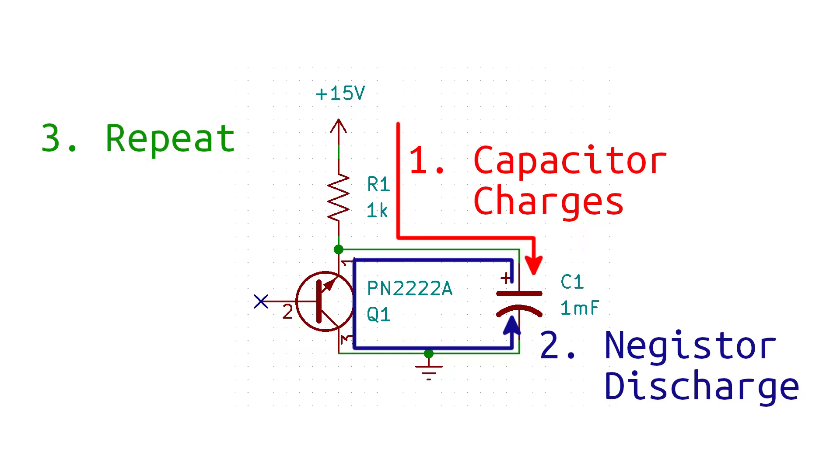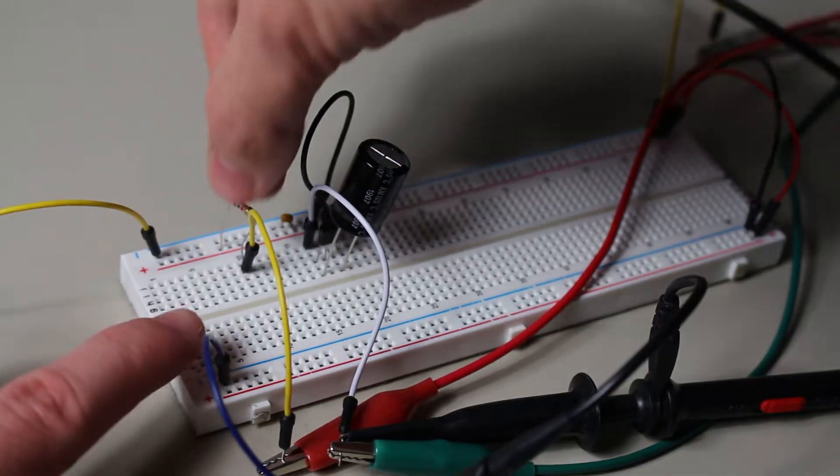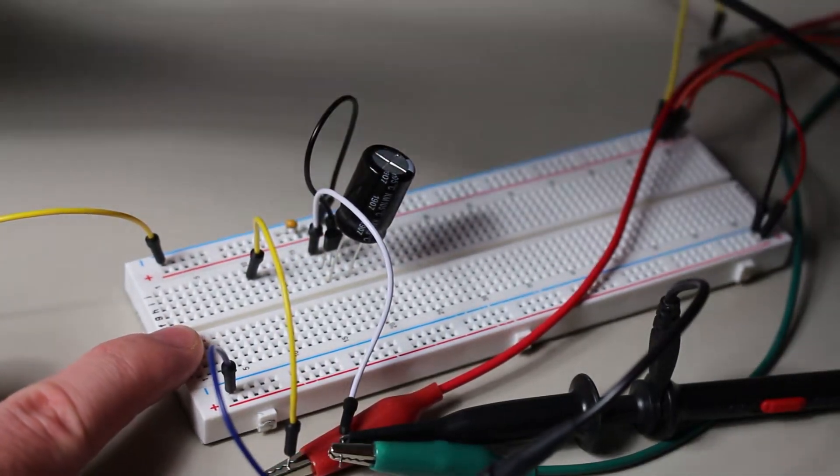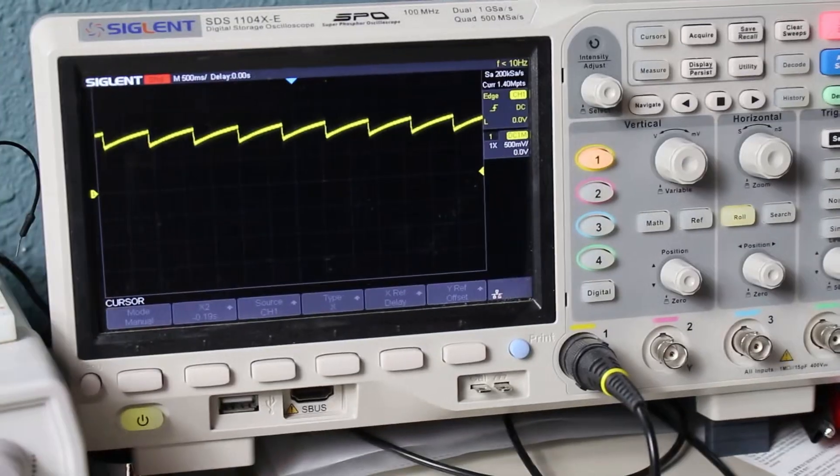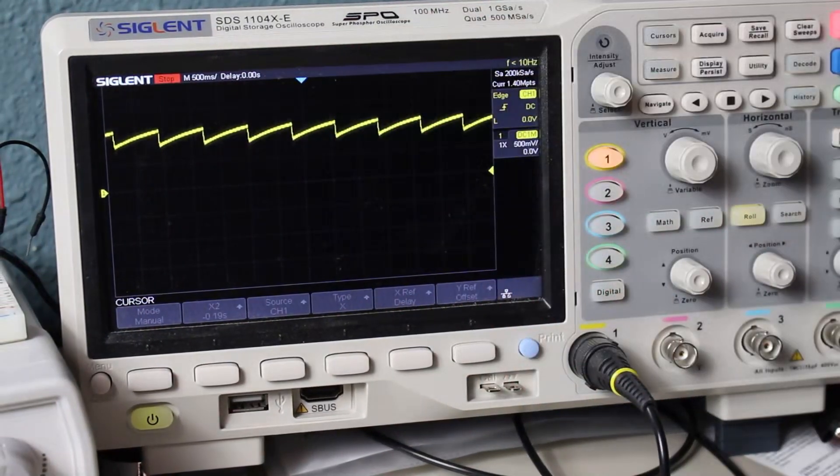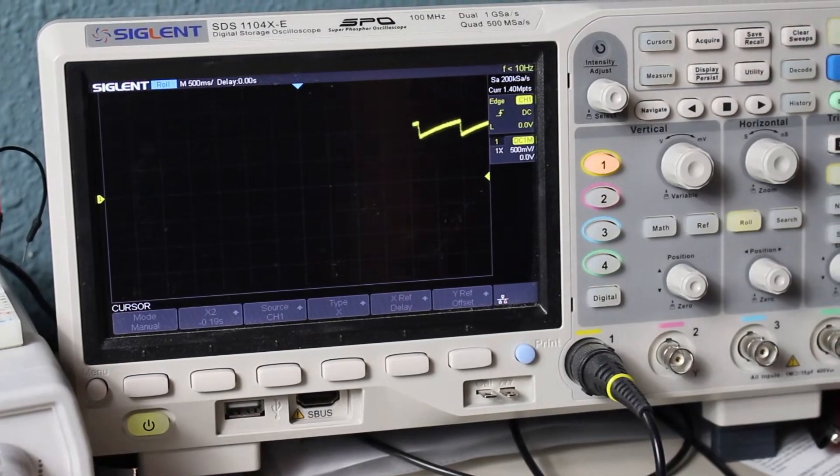If we want to, we can speed up the oscillation. Let's replace the resistor with a 330 ohm resistor instead. This should make the capacitor charge even faster, and therefore it should increase the frequency. And indeed it does.